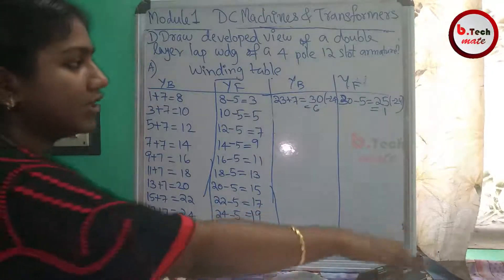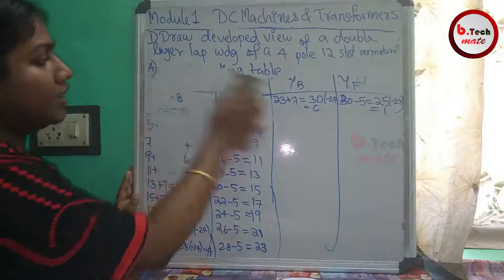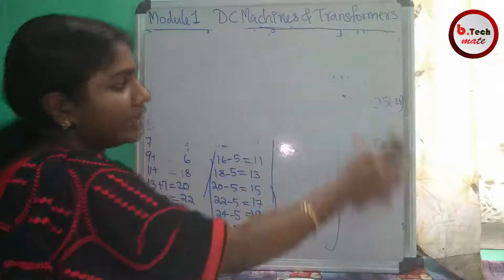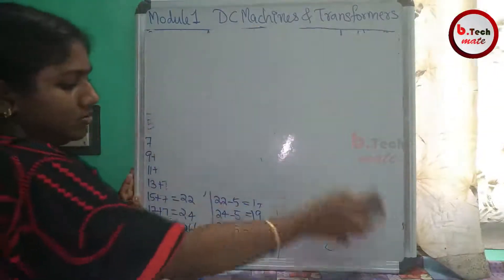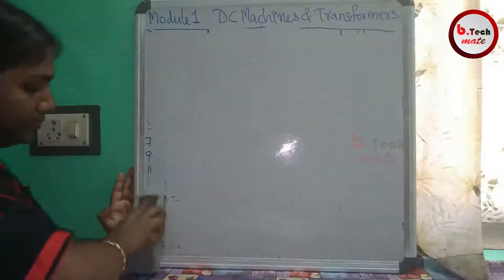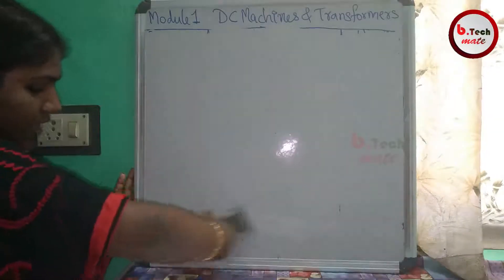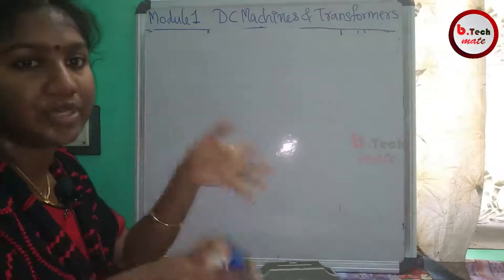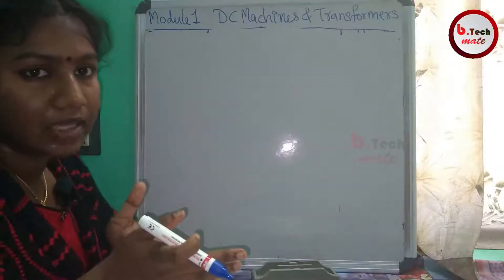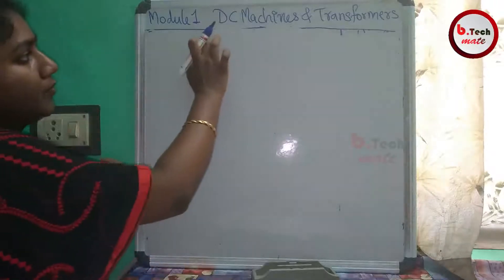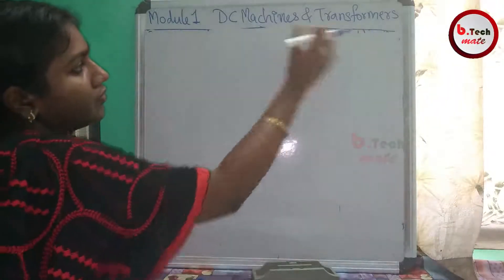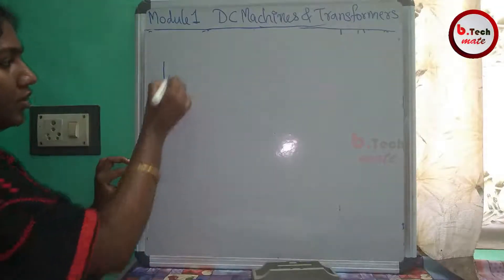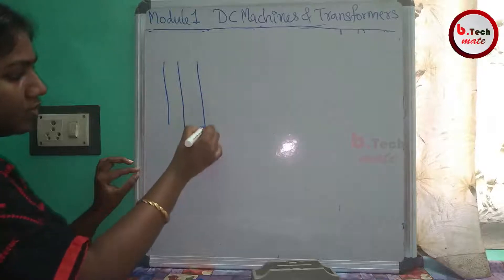Now we set up the drawing. We place the conductors on the table. We have 24 conductors total, and we need to see how many conductors are in each slot for the developed winding diagram.